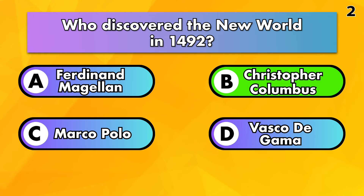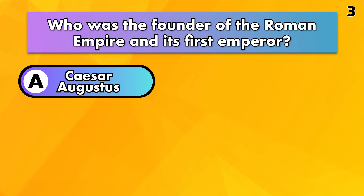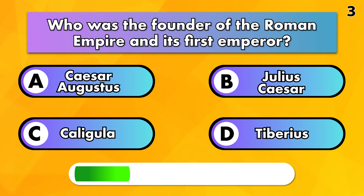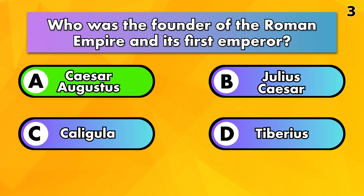Who was the founder of the Roman Empire and its first emperor? Caesar Augustus, Julius Caesar, Caligula or Tiberius? The answer is Caesar Augustus.